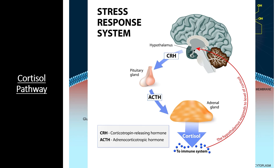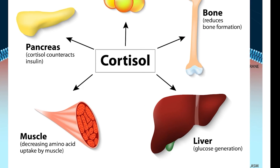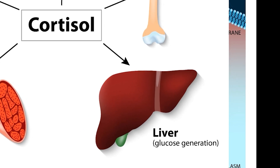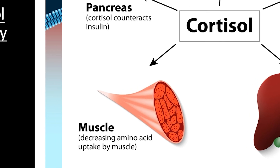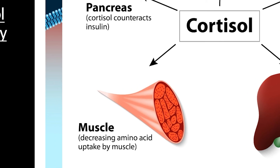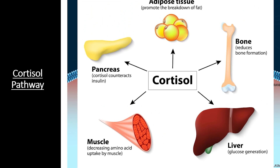The really interesting thing about the cortisol pathway is the massive variability in responses it causes in different cell types. Cortisol, known as the stress hormone, is released by the adrenal gland in large quantities during stressful events, causing many diverse effects across tissues. For instance, when cortisol hits liver cells, it causes gluconeogenesis — creating new glucose molecules and sending them into the bloodstream — giving a stressed organism the energy it needs. It also causes muscles to stop taking in amino acids so they can be used for energy.